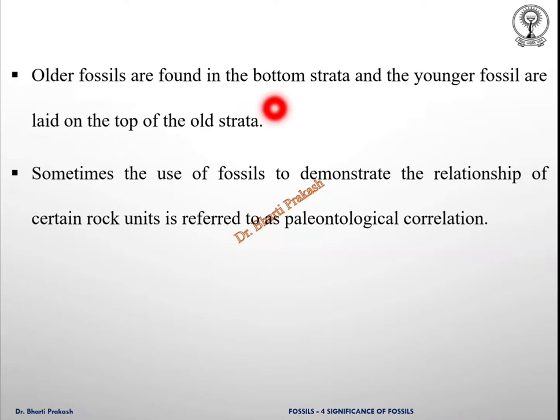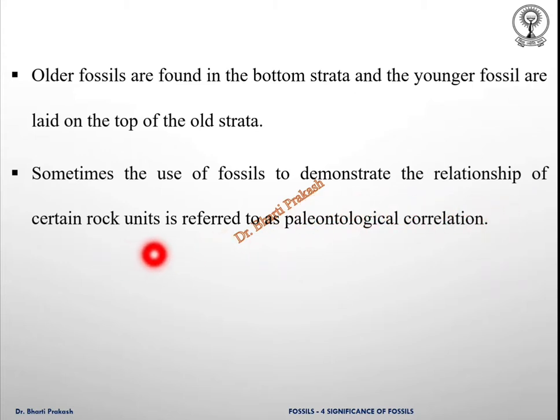The older fossils are found in the bottom strata and the younger fossils are laid on top of the old strata. This principle of superimposition enables the stratographer to estimate the age of a particular rock. Sometimes the stratographer determines the sequence of the rock strata based on the law of faunal or floral succession. According to this, the fauna and flora are distinctive for each portion of earth's history, and their fossils are formed one after the other in a definite order. Based on this principle, he determines the rock strata when it has been disturbed by deformation of the earth's crust.